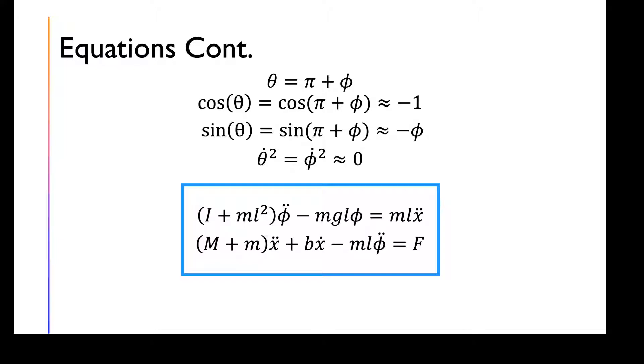Substitute that into cosine theta, which gives negative one, sine theta, which gives negative phi, and the angular velocity, which gives zero. We come out with these two equations.